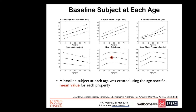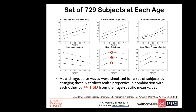A pulse wave was simulated for a set of subjects at each age decade by changing the six identified cardiovascular properties in combination, by plus and minus one standard deviation from the age-specific mean values. This resulted in 3 to the power of 6, equal to 729 subjects at each age group, and a total of over 4,000 subjects in the database.